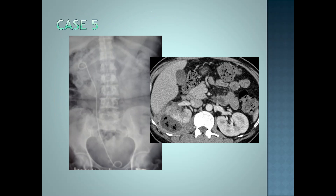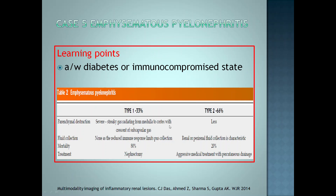The fifth case: abdominal radiograph shows presence of air in the right renal fossa. Contrast-enhanced CT shows heterogeneous enhancement with loss of corticomedullary differentiation in the right kidney. There is extensive perinephric fat stranding associated with perinephric collection with air within it. This is emphysematous pyelonephritis. This condition is associated with diabetes or immunocompromised status. Type 1 is more severe with extensive parenchymal destruction; fluid collection is limited, there is high mortality, and it can be treated only with nephrectomy. Type 2, shown here, is more common: parenchymal destruction is less, it is a less severe type, perinephric fluid collection with air is characteristic, mortality is less, and it can be treated with aggressive medical treatment and percutaneous drainage.